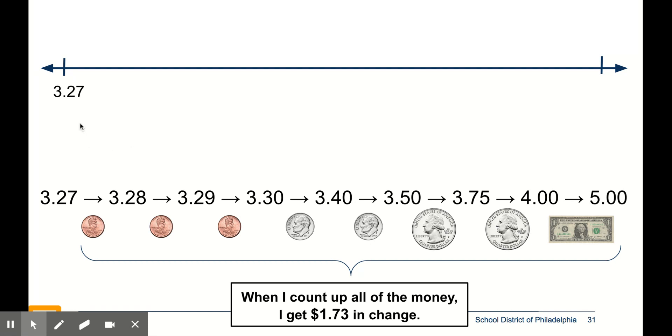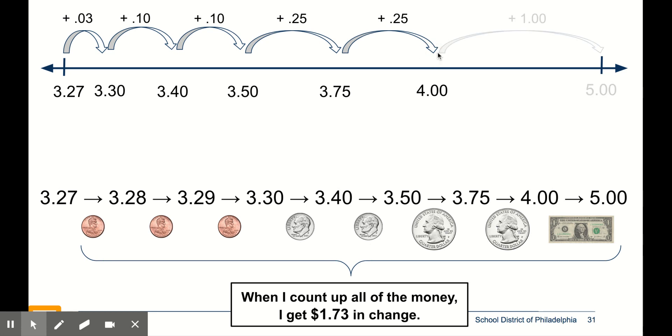If I start at $3.27 and I add $0.03, it gets me to $3.30. $0.10 more gets me to $3.40, $0.10 more, $3.50, $0.25, $3.75, $0.25, $4, $1, $5. I'm basically doing the same thing on my open number line that I did down here with my coins.